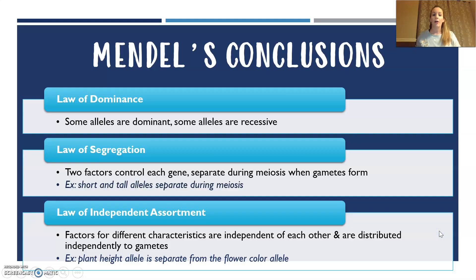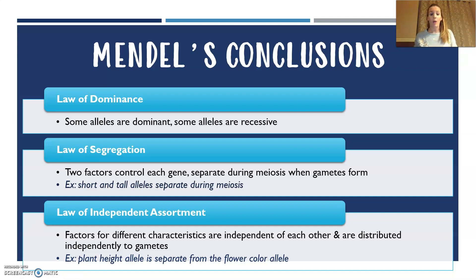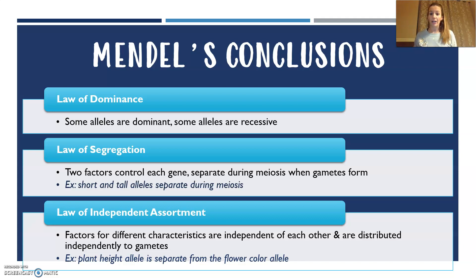So when we talk about conclusions — put a big star by this in your notes. Mendel came up with three different laws based on all of this work he did with pea plants. First, the law of dominance: simply that some alleles are dominant and some alleles are recessive.